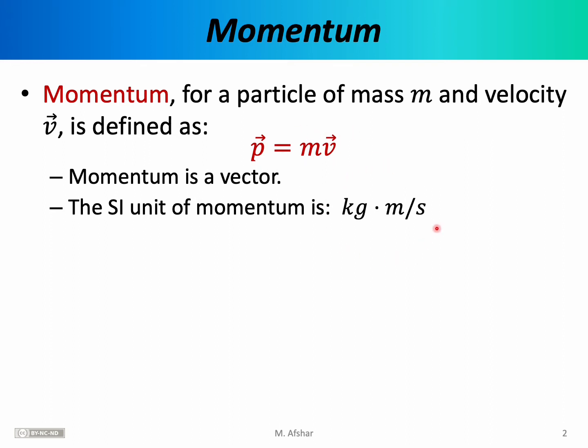There's no special name given to this particular combination of units. In physics, we usually like to use the name of famous physicists like Newton or Joule or Watt, but in this case for historical reasons there is no special name given to this, so the unit for momentum is simply known as the kilogram meter per second.